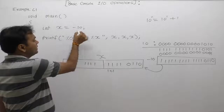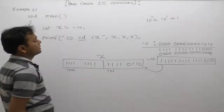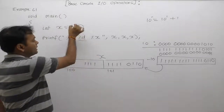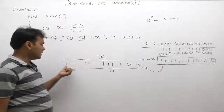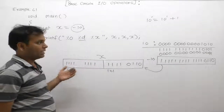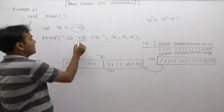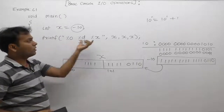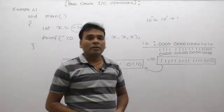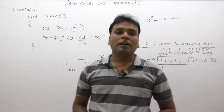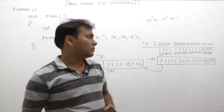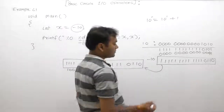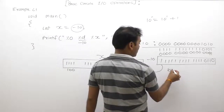Whenever this number is displayed using percent d — decimal number system — it prints minus 10. In case of octal or hexadecimal, as discussed during number system conversions, if you have the binary number available, you can directly convert to octal by creating pairs of the required bits — binary to octal.